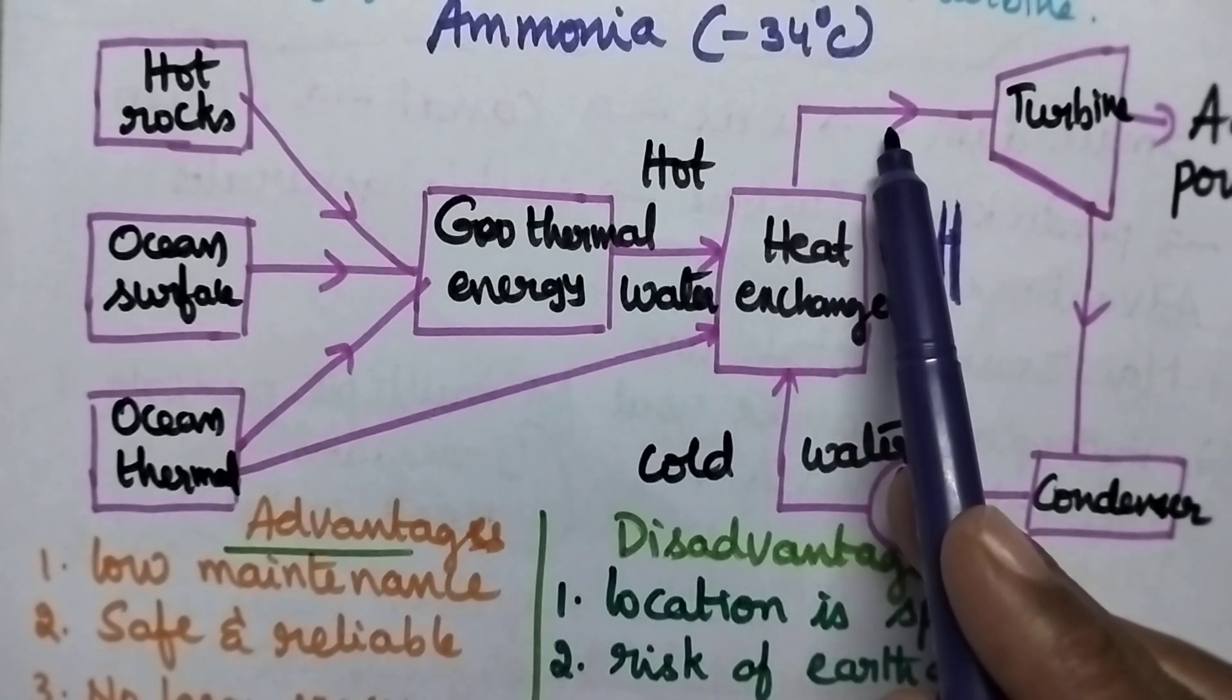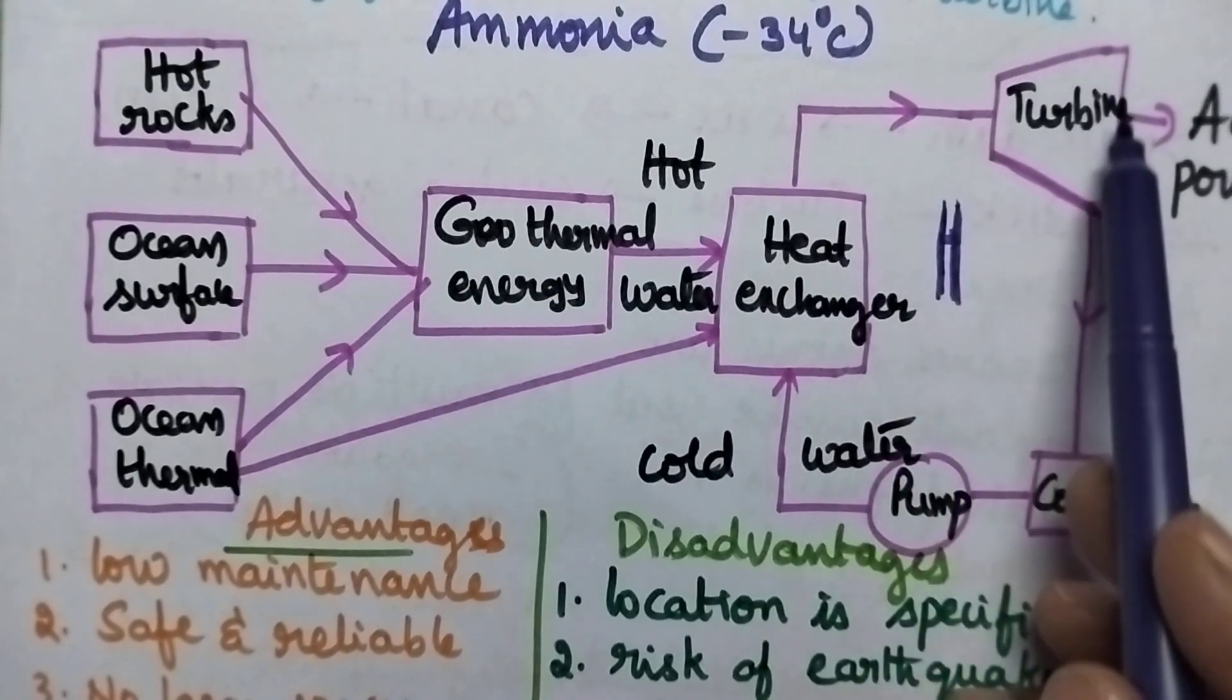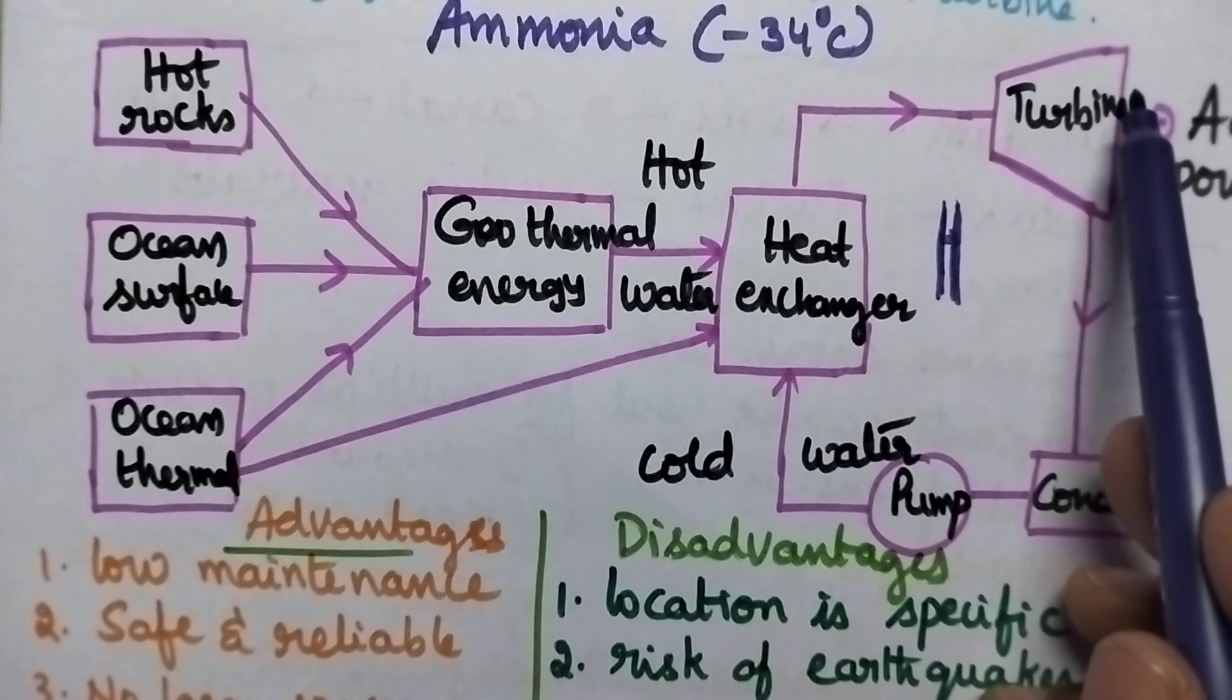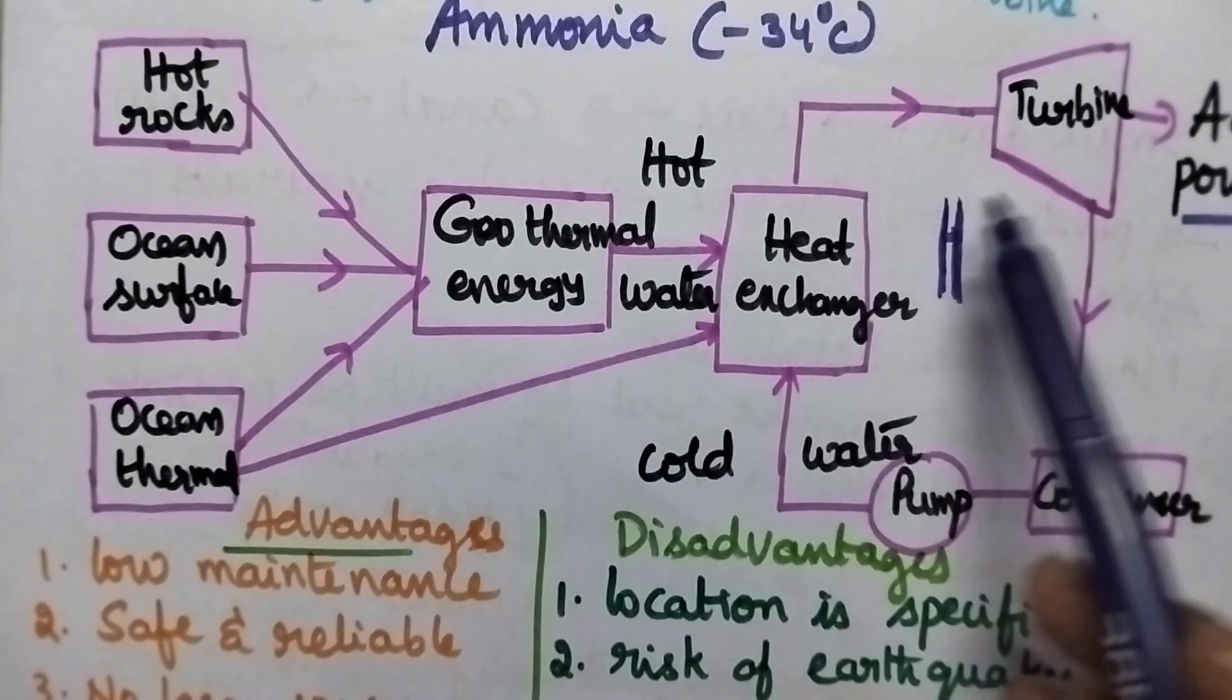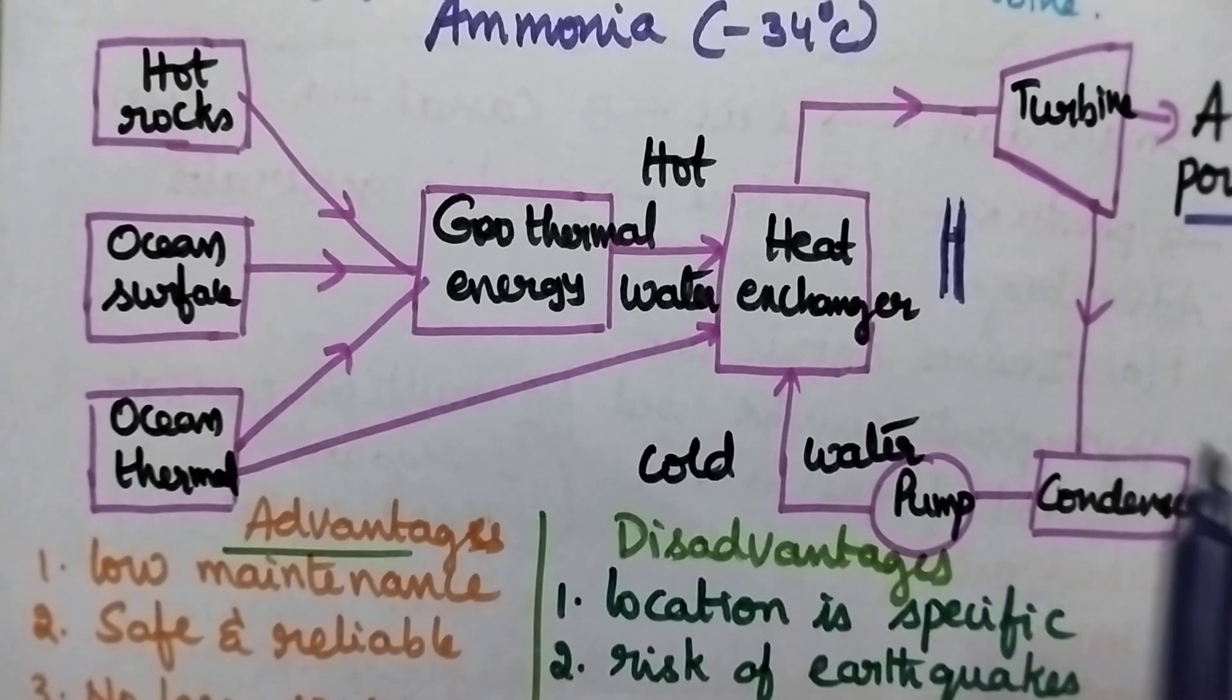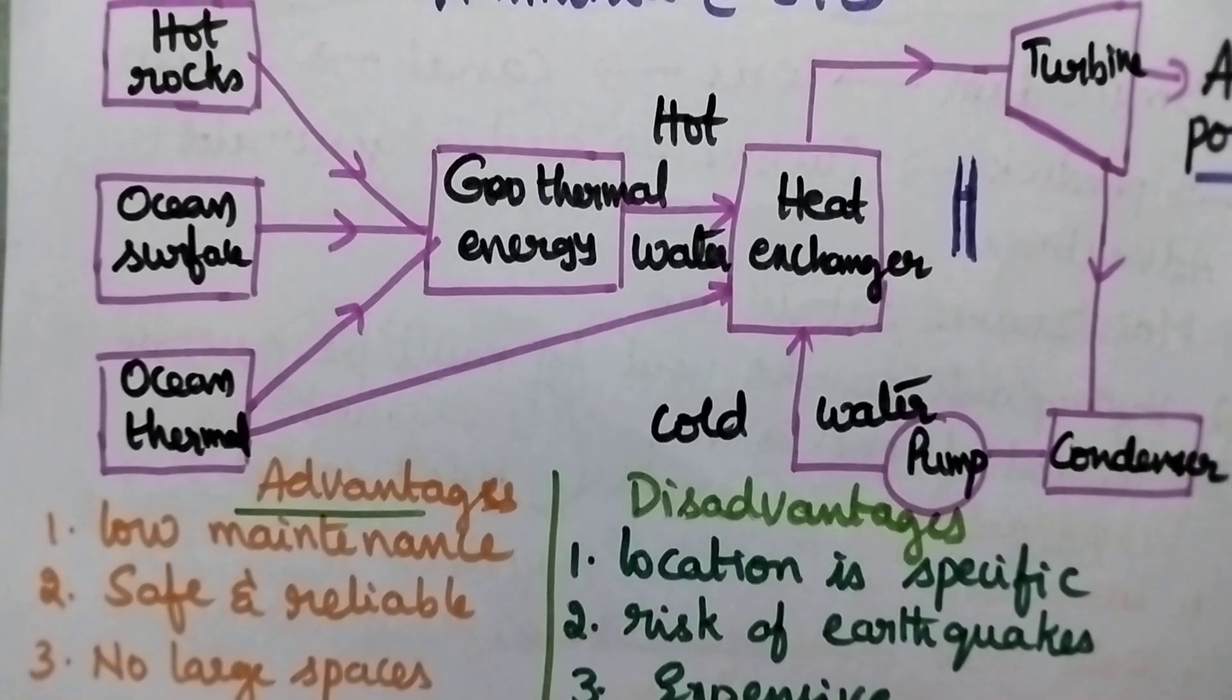At very high kinetic energy, the vapors of liquid ammonia rotate the turbine, which is connected to a generator, producing electricity. The ammonia vapor is then condensed and pumped back into the heat exchanger. This is the mechanism of a binary geothermal plant.